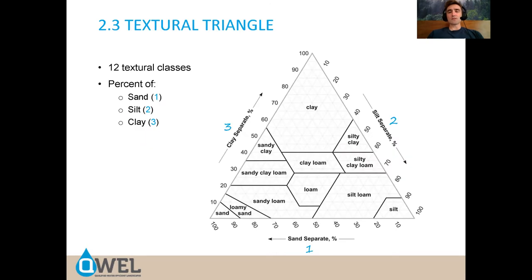Because there are three categories of soil texture — called separates because you can actually separate and measure them — you get a percentage for each. Since there are three components rather than two, it creates a triangle. Every single soil will be somewhere on this triangle based on the percentage of its three different types of separates: sand, silt, and clay.